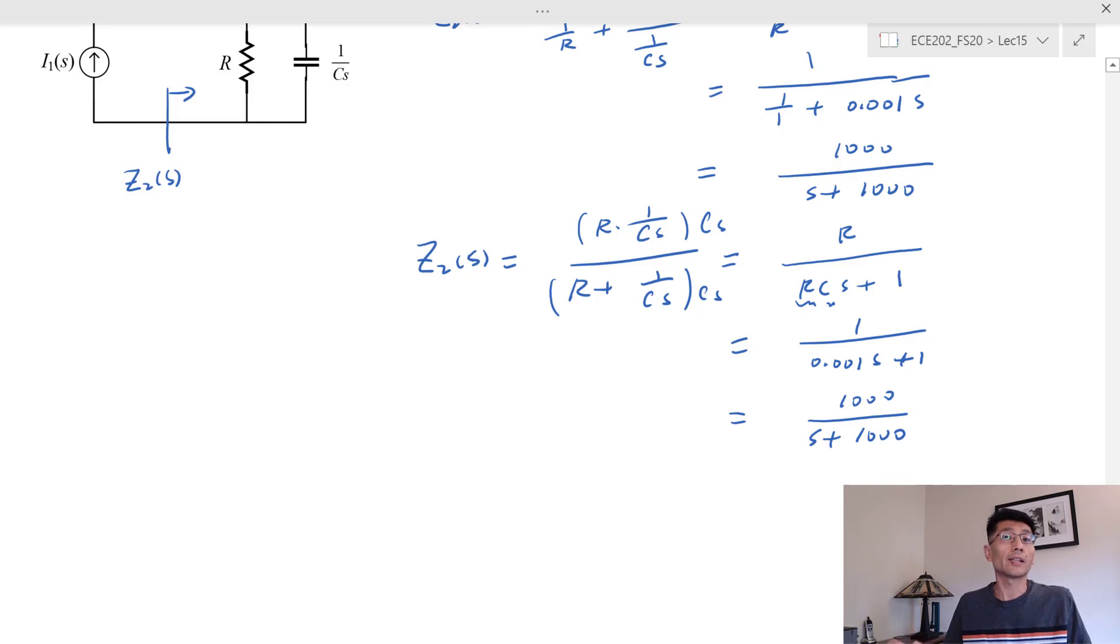So that's the concept for the driving point impedance for the one-port network. The one-port network sometimes, for short, is just called one port, and you know what...